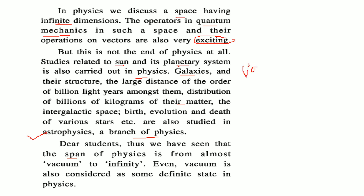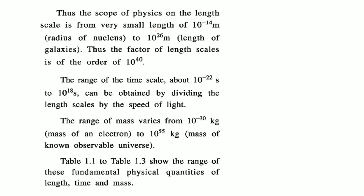The span of physics goes from vacuum to infinity — even vacuum is considered a definite state in physics. The scope of physics on the length scale is very, very small — 10⁻¹⁴ meter, the radius of the nucleus — to 10²⁶ meter, the size of galaxies, a factor of 10⁴⁰. The range of time scale is about 10⁻²² seconds to 10¹⁸ seconds, obtained by dividing the length scale by the speed of light (3 × 10⁸ m/s). The range of mass varies from 10⁻³⁰ kg (the electron) up to 10⁵⁵ kg (the observable universe). Let us see a table showing the range of fundamental physical quantities — length, time, and mass.